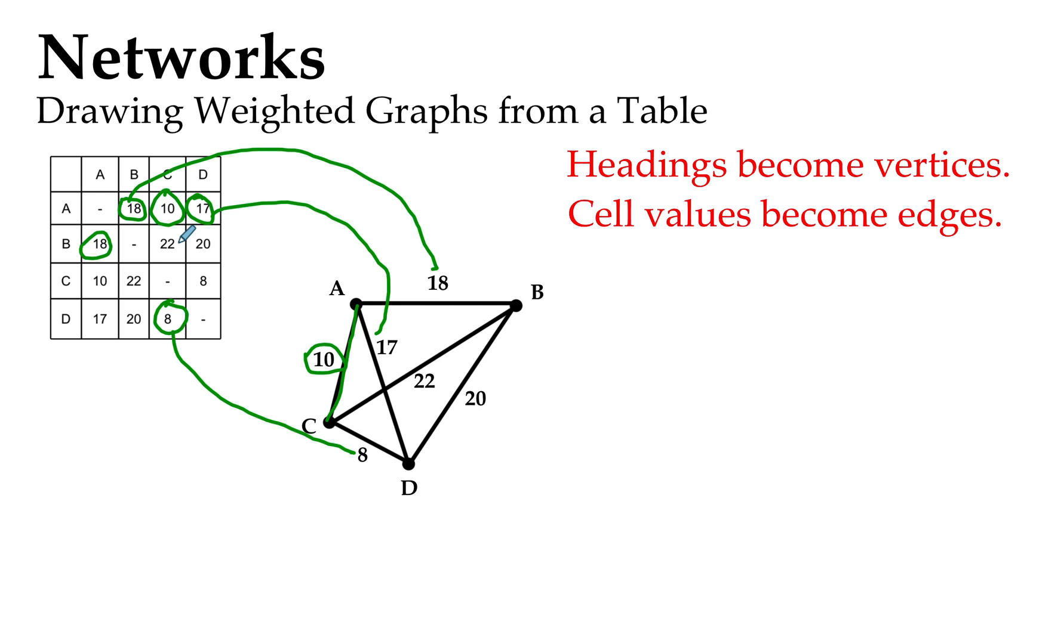So our headings, our A, B, C's and D's here, our headings for our columns and our rows, they became our vertices, and our values in each of the cells, our number values in there, they became the edges or the lengths of the edges, the weightings on the edges.